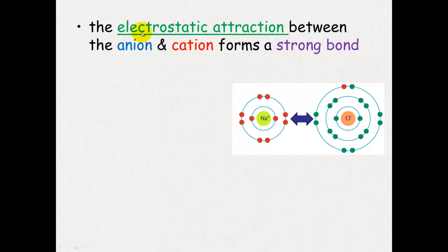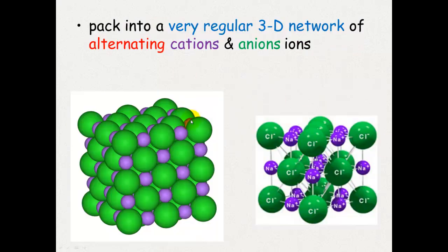So it's this electrostatic attraction between the anion and the cation which will form a very strong bond. And it makes this regular lattice shape structure which has got alternating cations, which are the positively charged ions, and anions, which are the negatively charged ions.